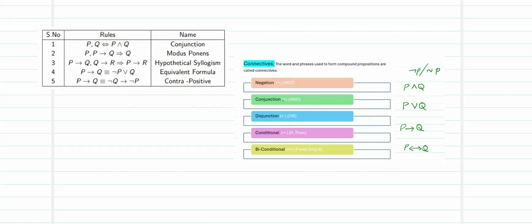Negation is a unary operator. If P is the proposition then the negation of P is given by either an inverted L with P or a tilde with P. Conjunction of two statements is the AND operator: P∧Q. Disjunction is the OR operator: P∨Q. Conditional is if P then Q. Biconditional works both ways: P if and only if Q. Keeping these connectives and formulas in mind, we will convert a problem statement into hypotheses and solve them using the direct methodology.